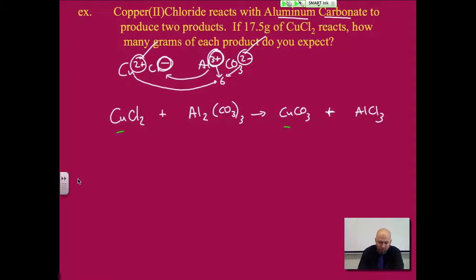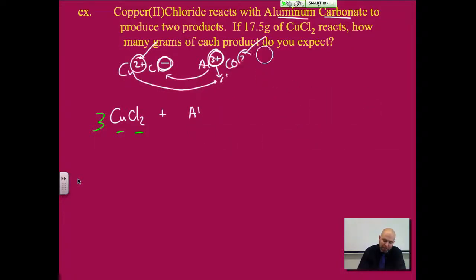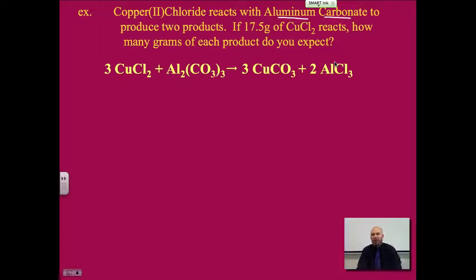We'll grab another color so we can just kind of differentiate. 1 copper, 1 copper, we're good. 2 aluminums, 1 aluminum. Let's put a 2 there. We now have 2 aluminums on either side. 2 chlorines, 6 chlorines. Put a 3 there, but that just, so that chlorines are good, but that changed our number of coppers so we should fix that one right away. 3 coppers. And now 3 carbons, 3 carbons, 9 oxygens, 9 oxygens on balance. Okay, so there it is. I'm going to bring it right back up. So there's our balanced equation.